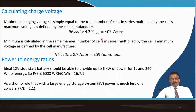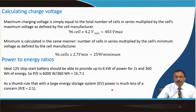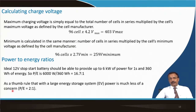Power-to-energy ratio is important. Consider a 12-volt start-stop battery in a scooter that provides up to 6 kW of power for 1 second and 360 Wh of energy. The P/E ratio is 6000 W ÷ 360 Wh ≈ 16.7:1. For large energy storage systems like electric vehicles, the P/E ratio is about 2:1 — but this needs improvement as sophisticated cars come to market requiring higher power density.